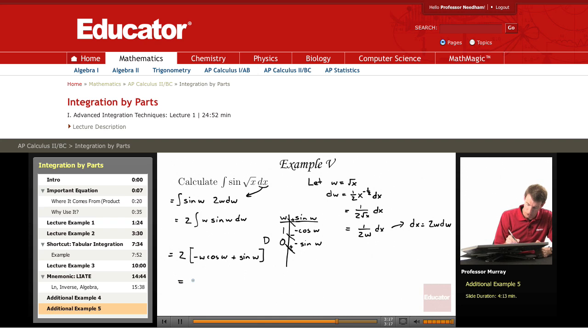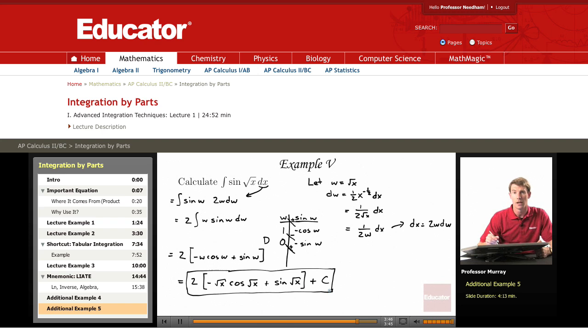Now I'm going to substitute back. We get 2 times, remember w was the square root of x, so negative square root of x cosine square root of x, plus the sine of the square root of x. And then, as always, we have to add a constant at the end.